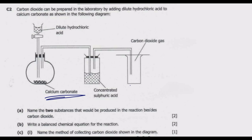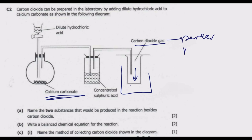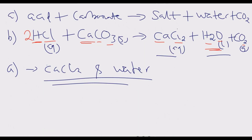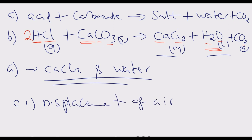We look at question C, Roman numeral one: name the method of collecting carbon dioxide shown in the diagram. Carbon dioxide is falling down because it is denser than air. So because CO₂ is denser than air, we collect it using the method known as displacement of air downward.